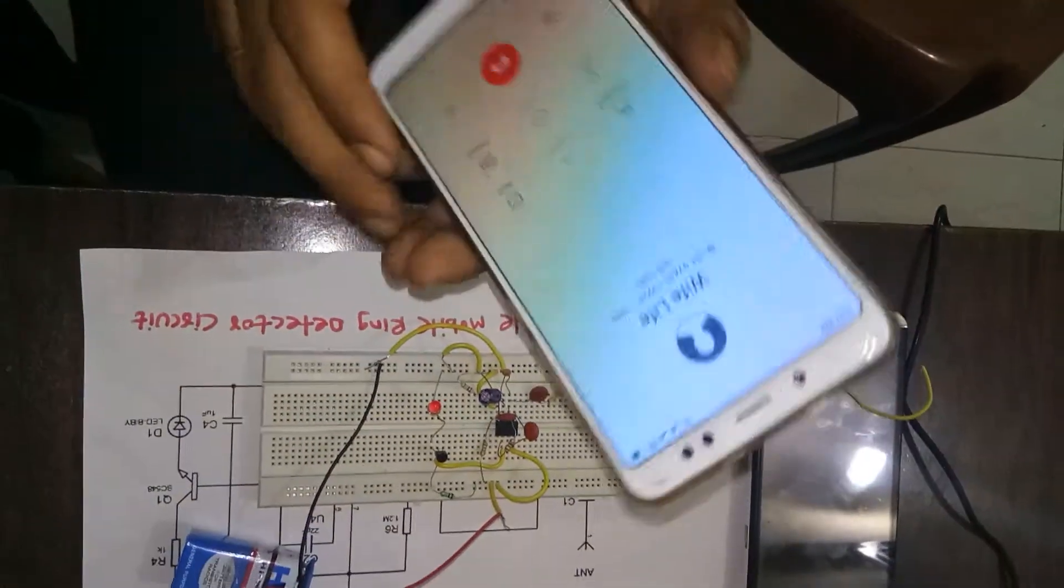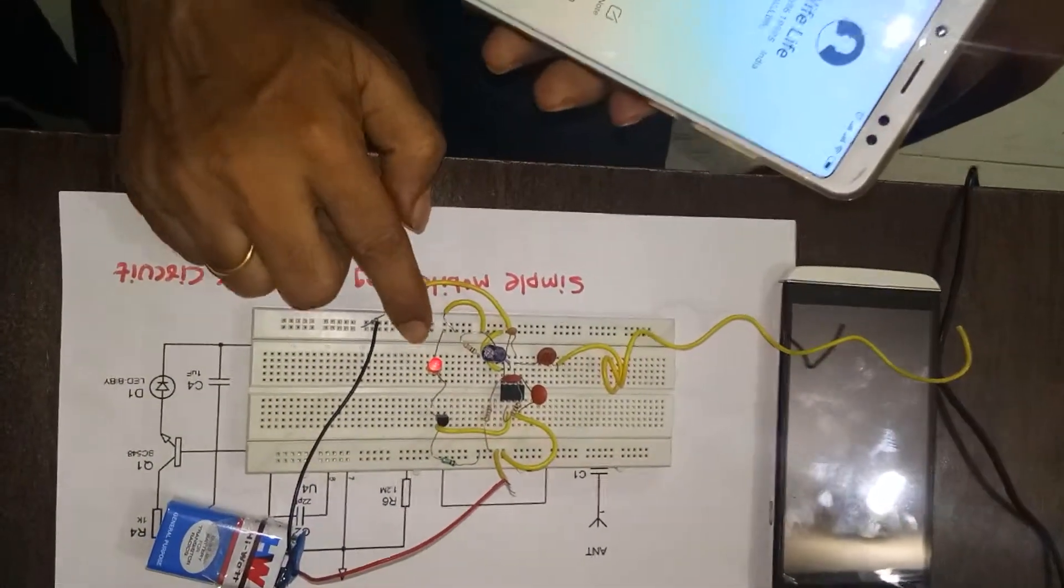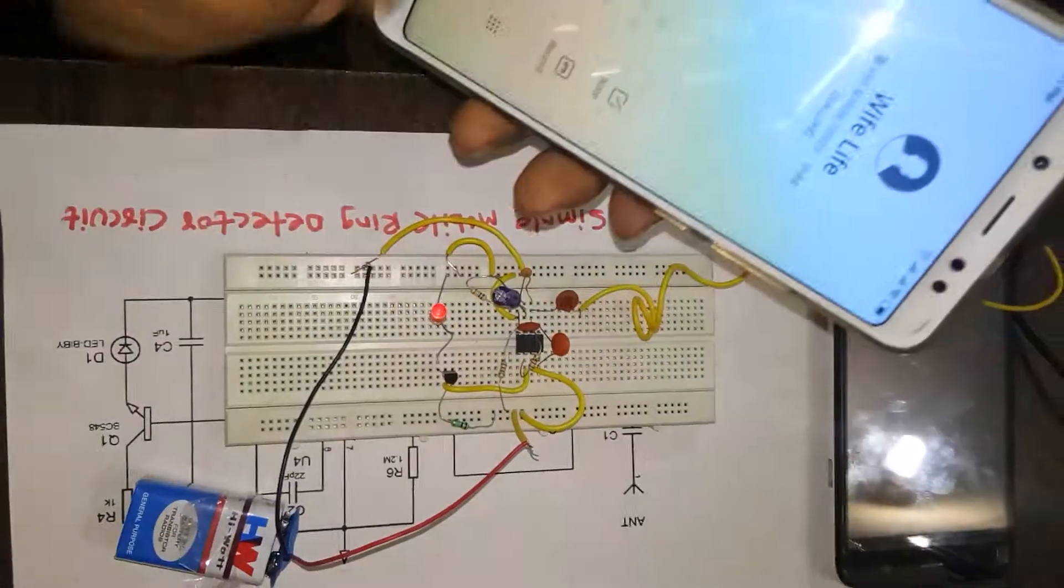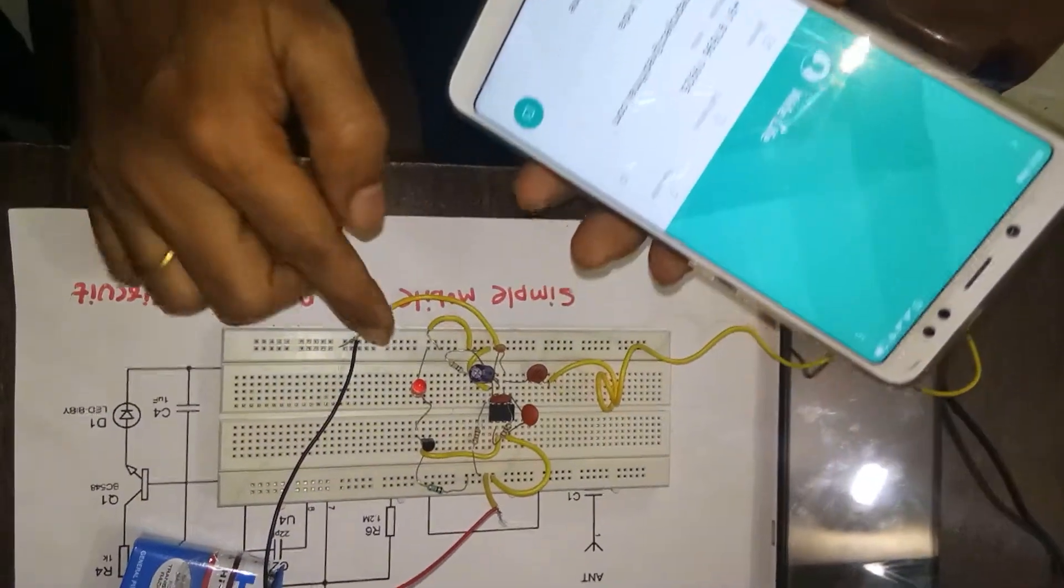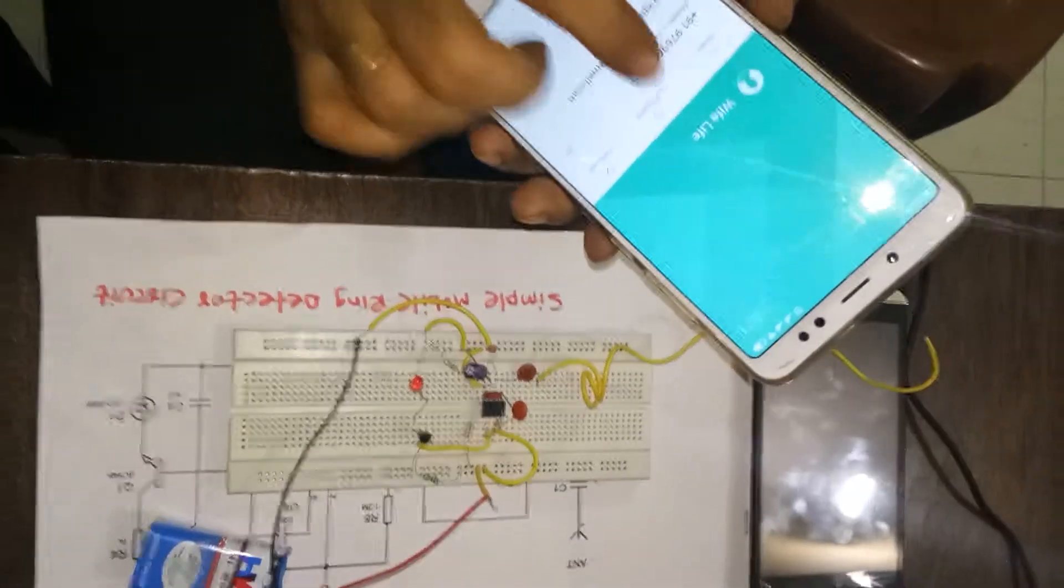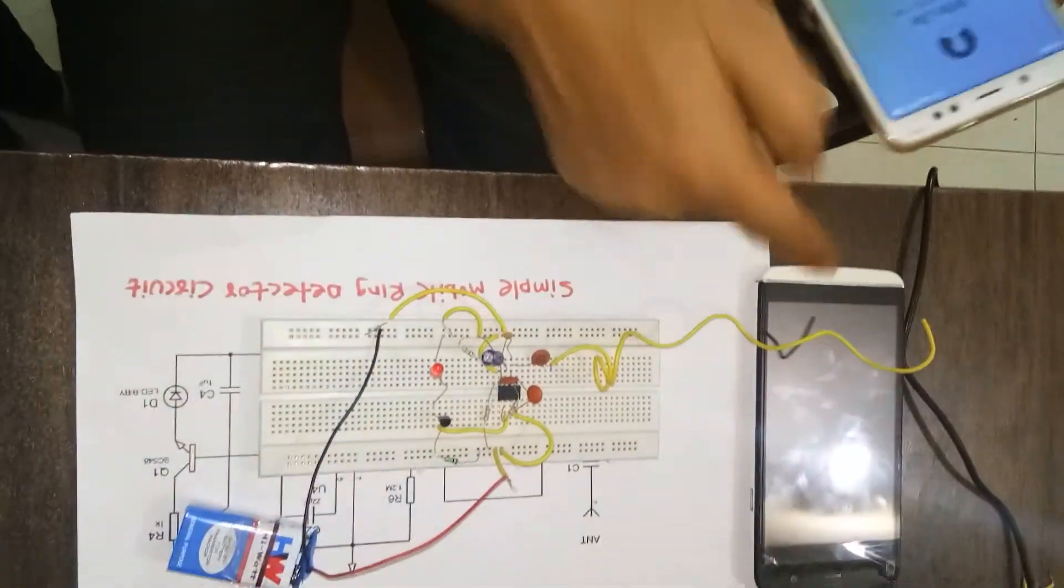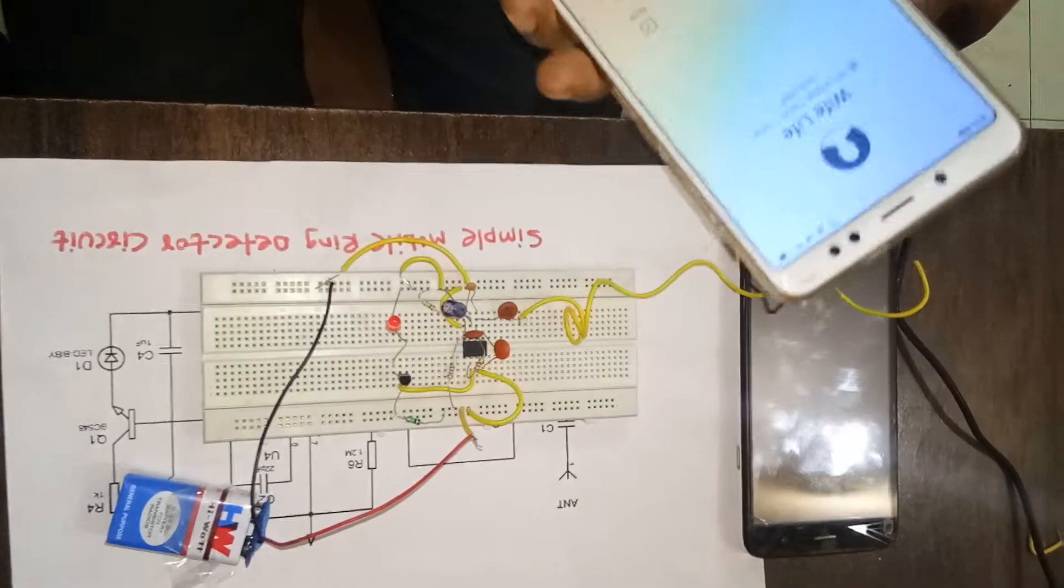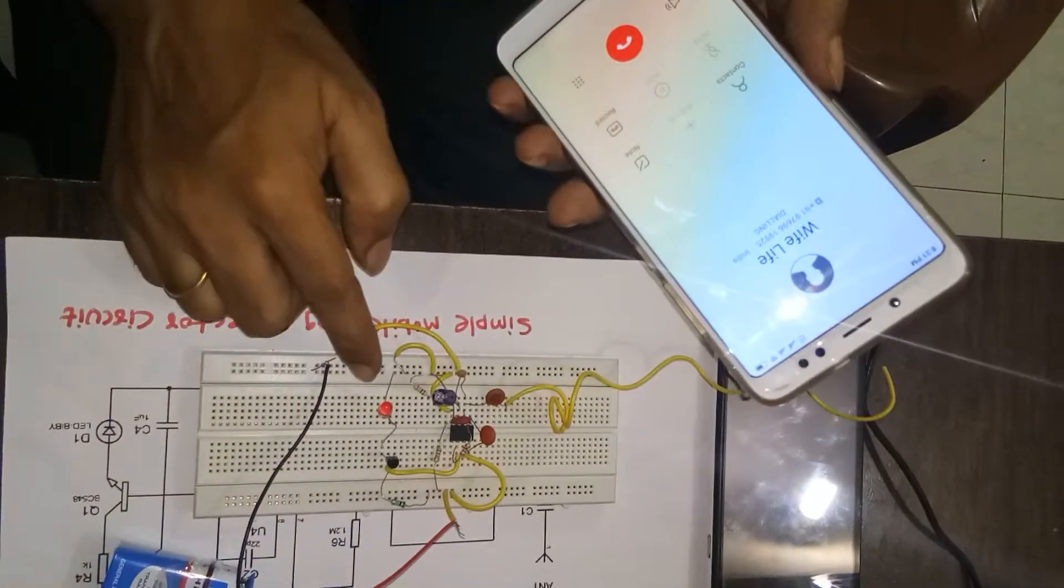When I call and it's ringing, the LED will glow over here. When I stop, the LED will stop. Again I will dial this number, so ringing will be done over there. In this way, the LED will glow.